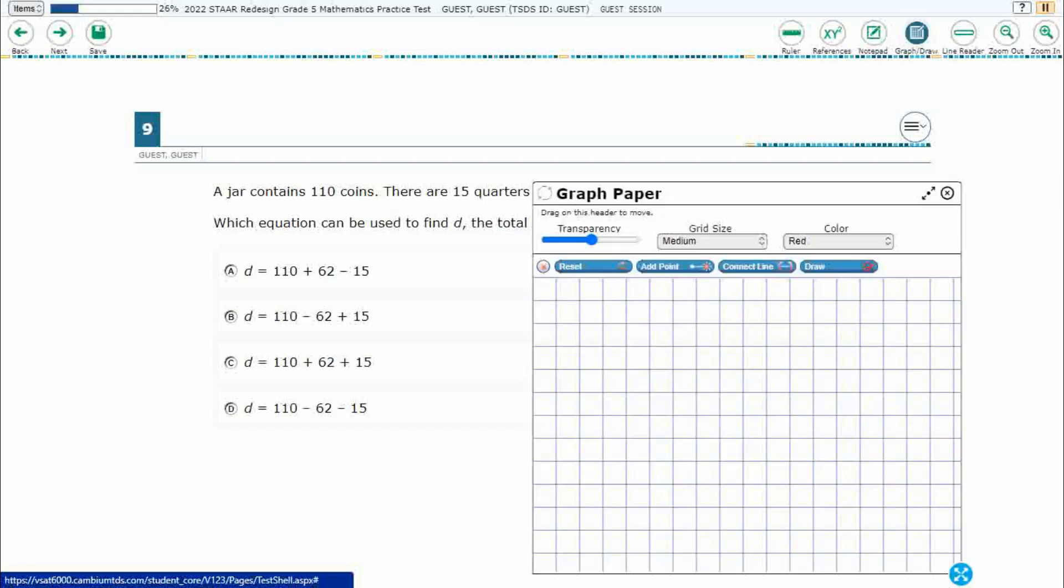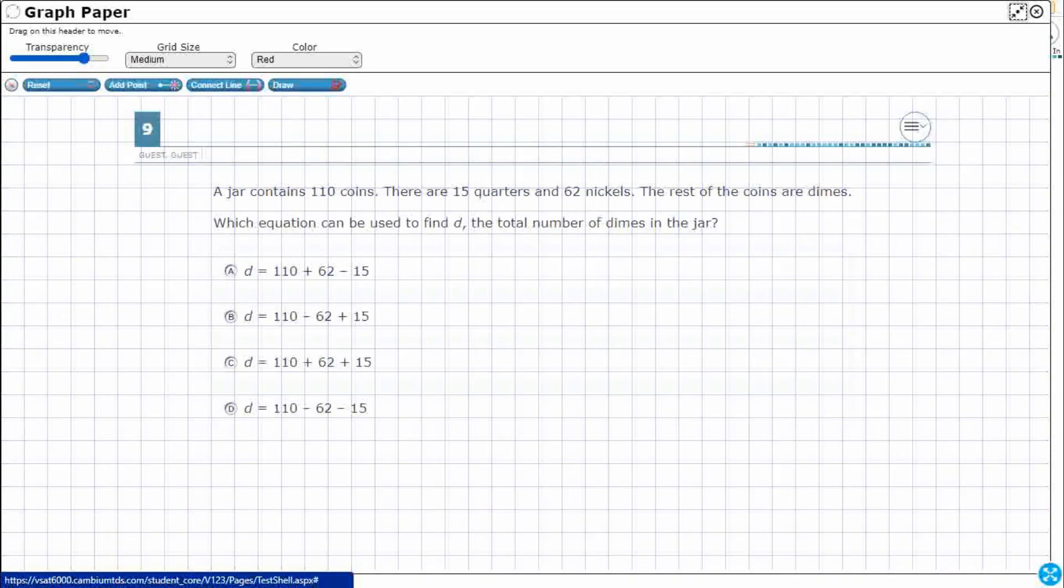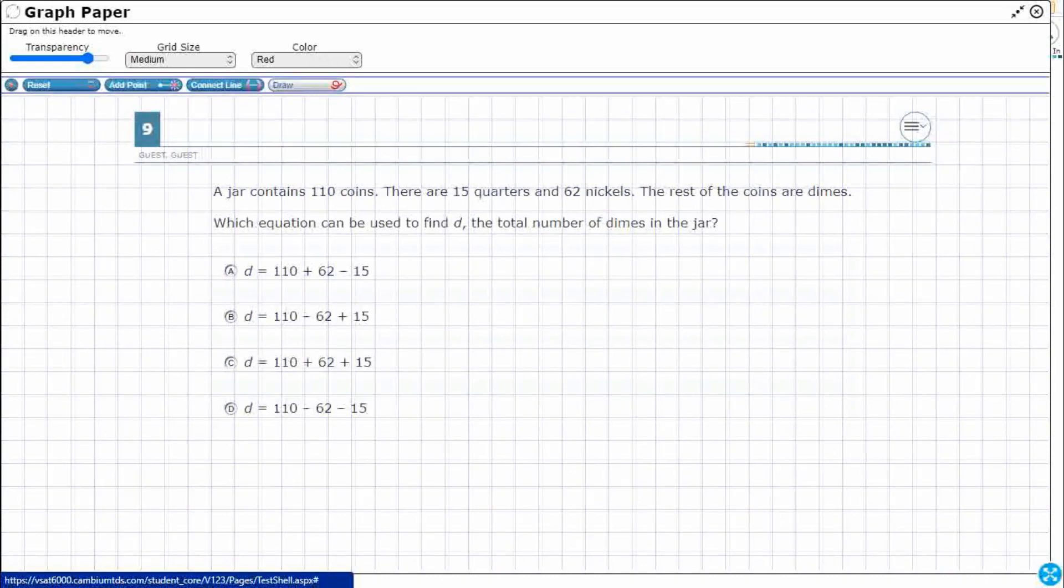So let's open up our graph draw feature. Let's expand that out. Let's increase our transparency so we can see what's going on behind. Alright, so let's draw. What do we have here?